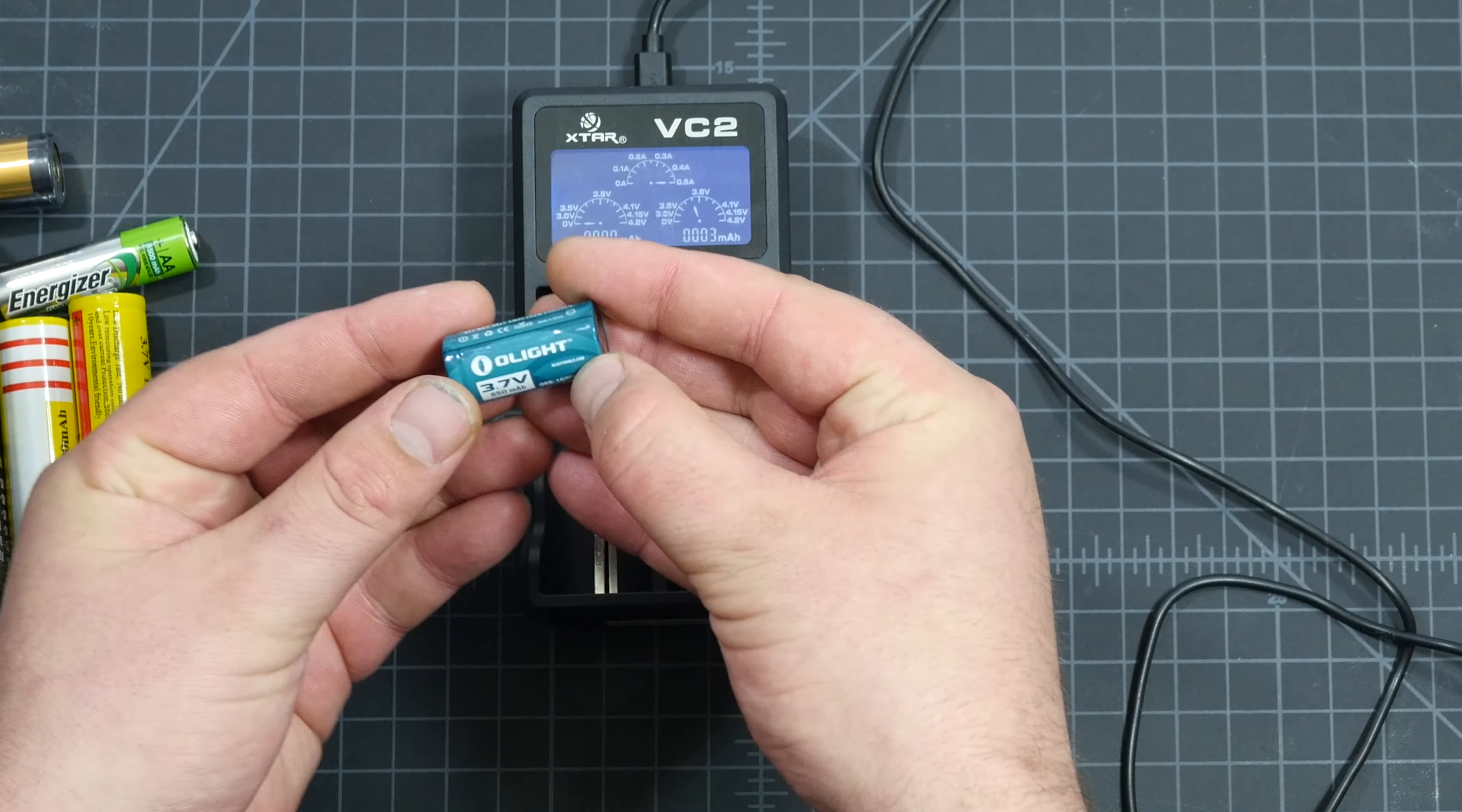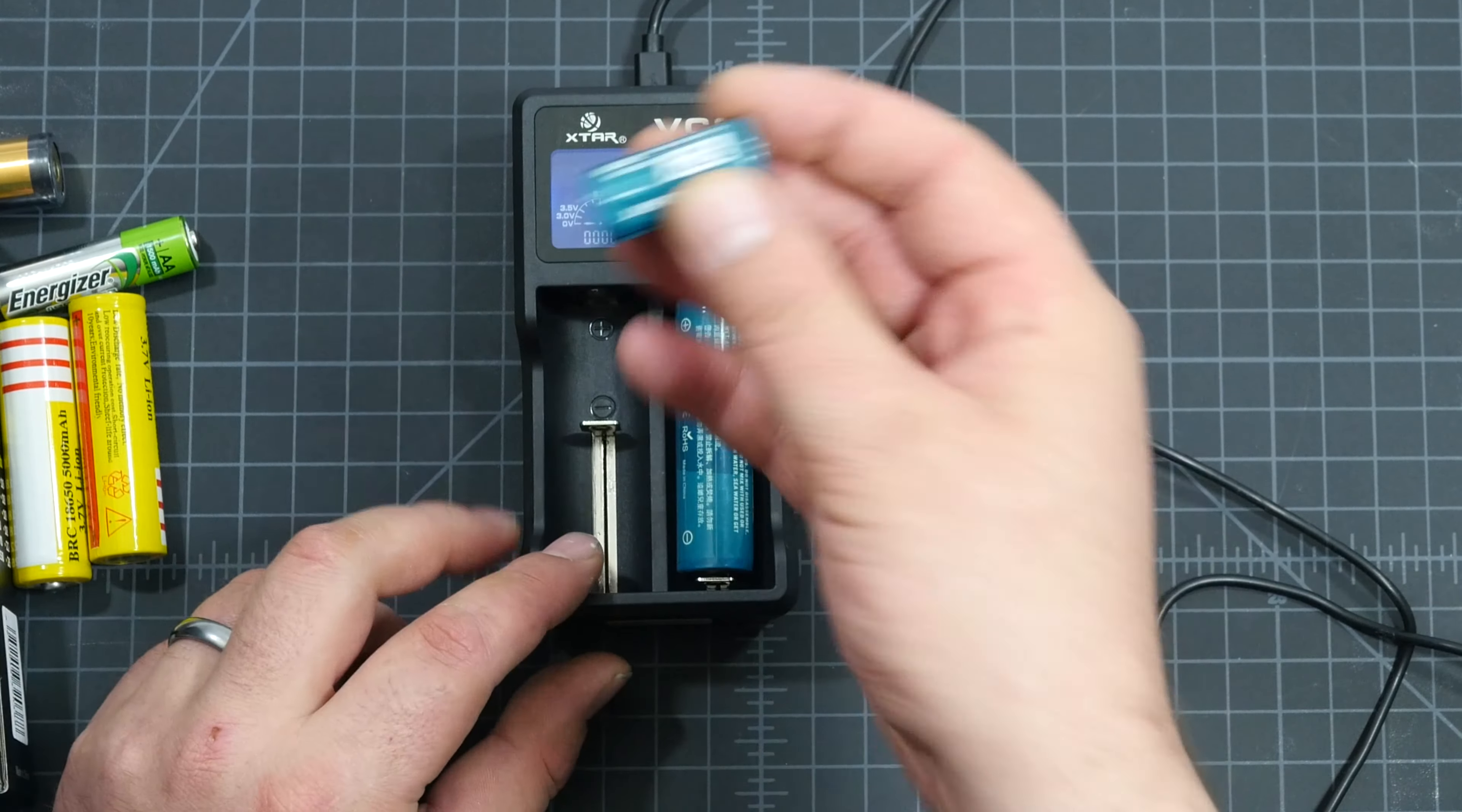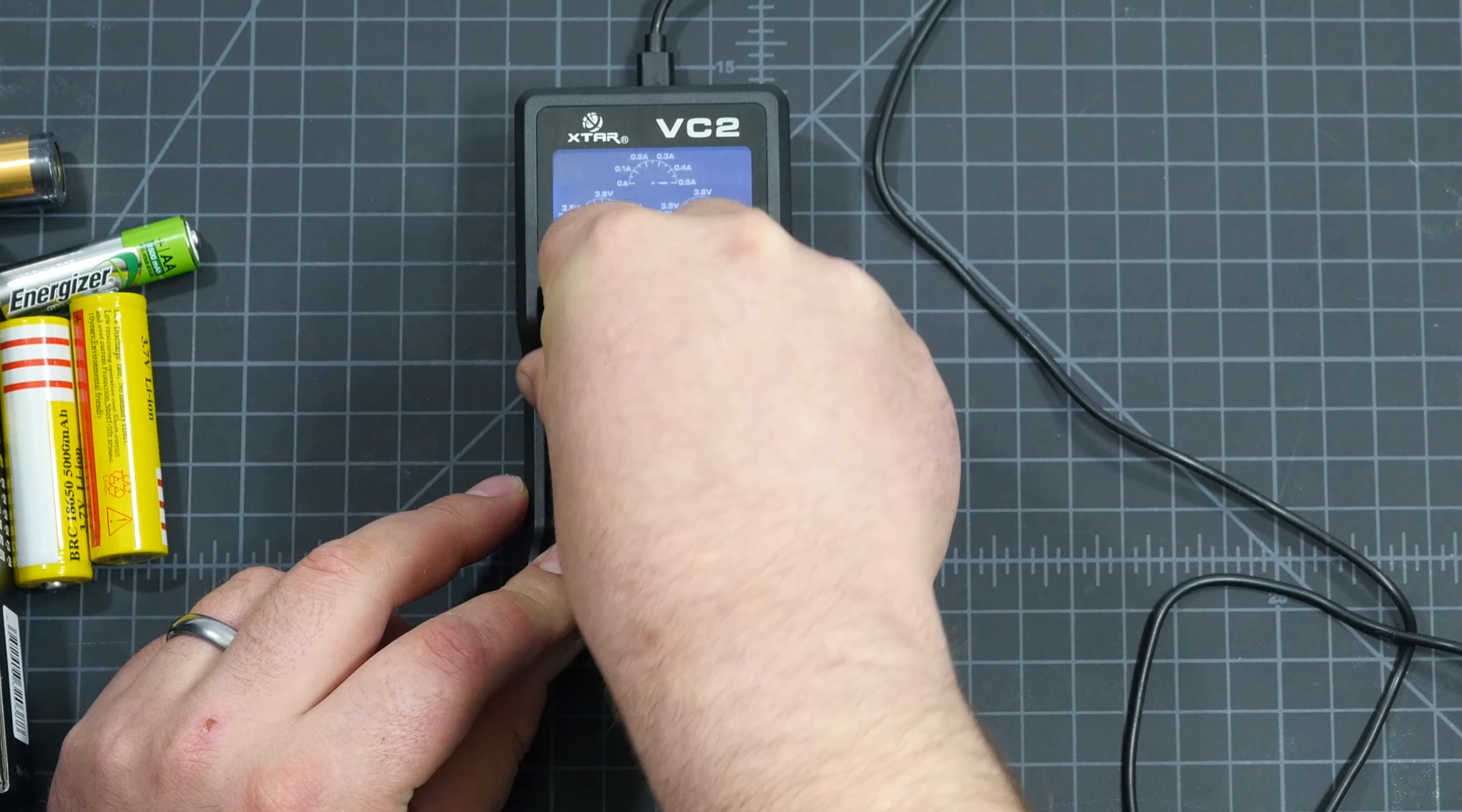So I have another smaller one. This one is a CR123. It's not on the box, but guess what? This one charges too.